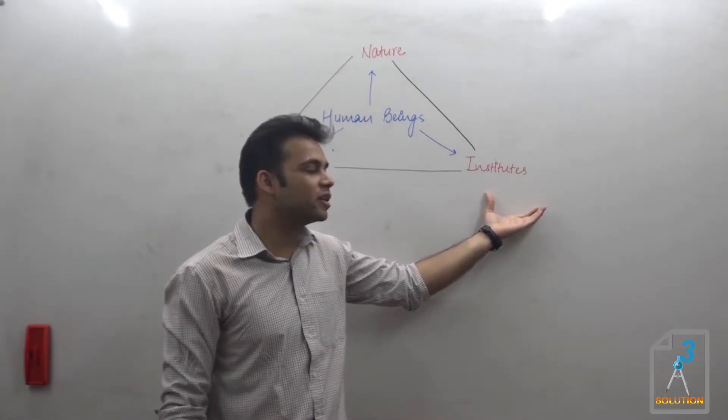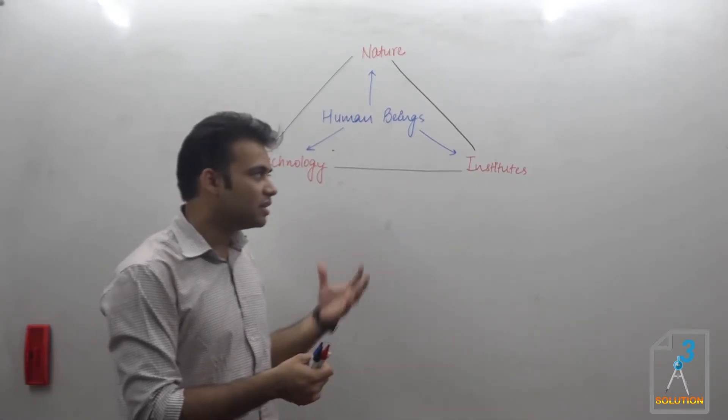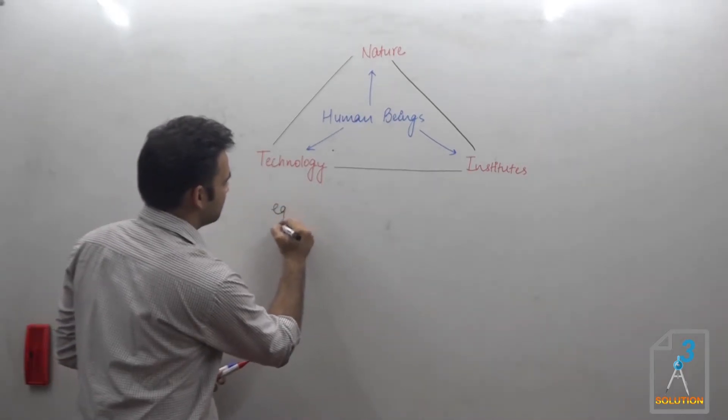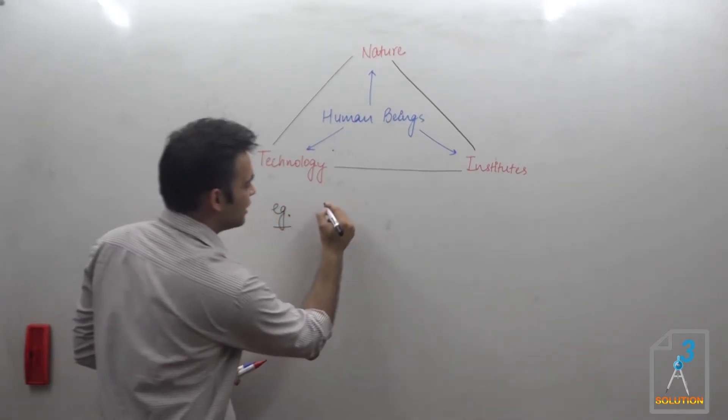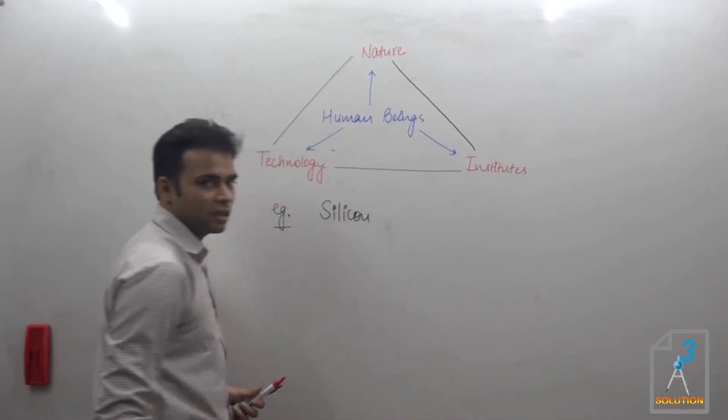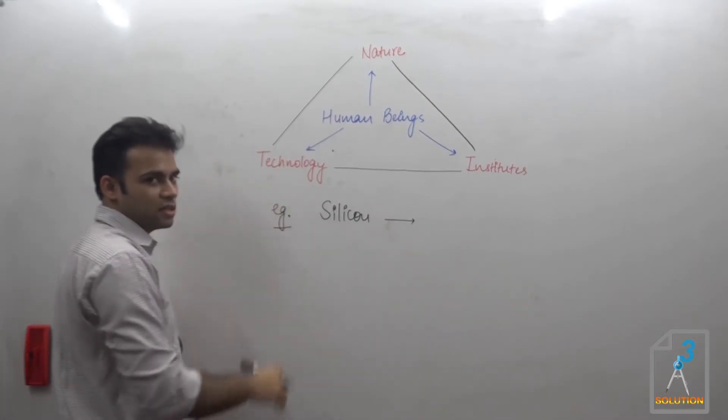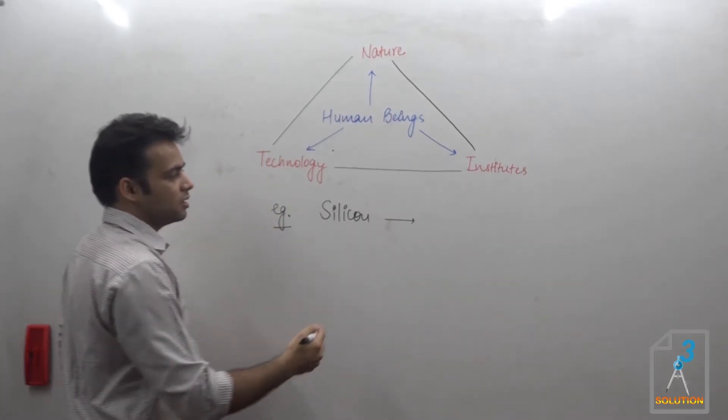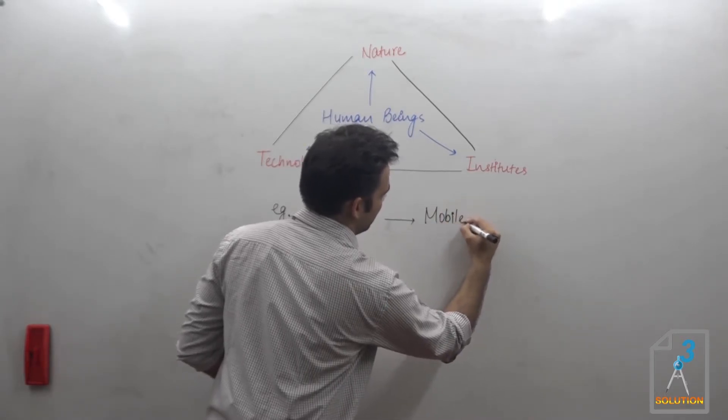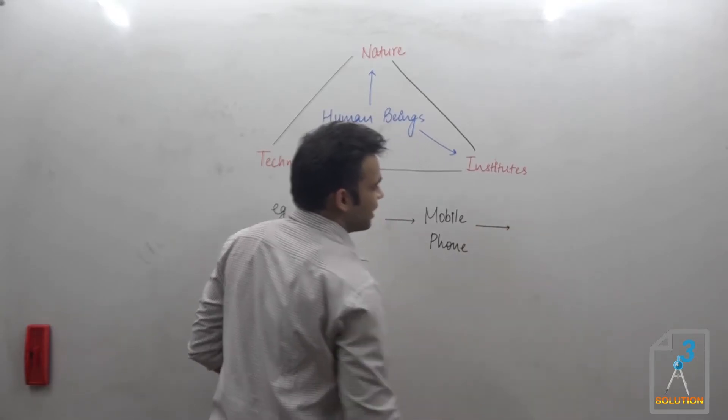In the current scenario, I can give you this example: you are getting silicon from nature, and using some technology you made a mobile phone.